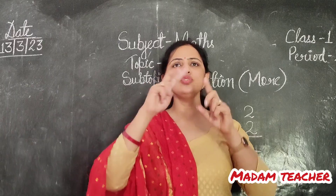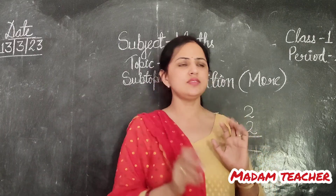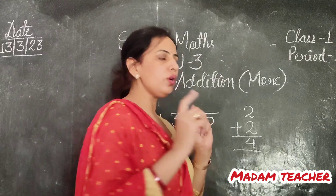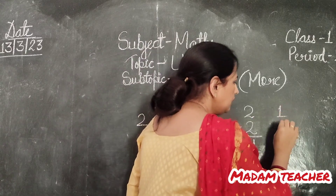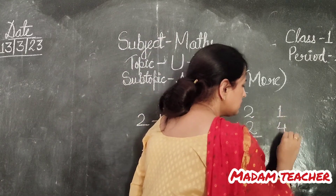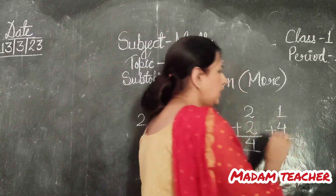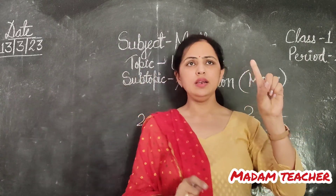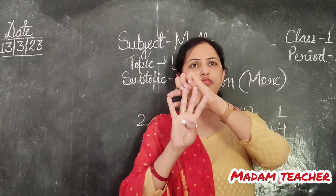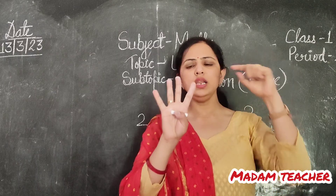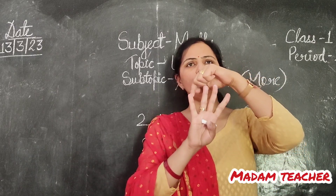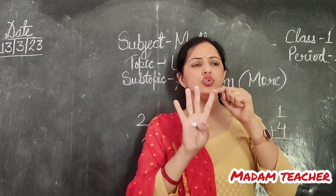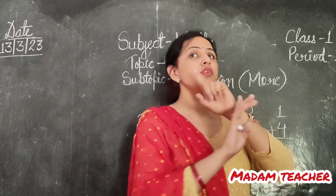2 plus 2 — 1, 2, 3, 4. It will come 4. Now 1 plus 4 — 1 and 4 — 1, 2, 3, 4, then 1, 2, 3, 4, 5. So 1 plus 4 will come 5.